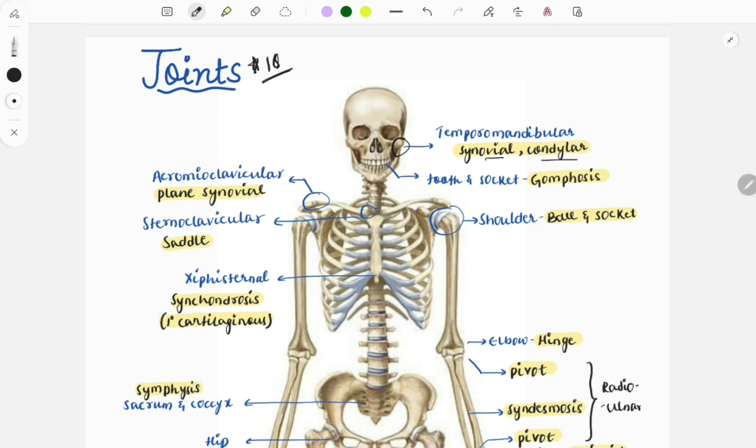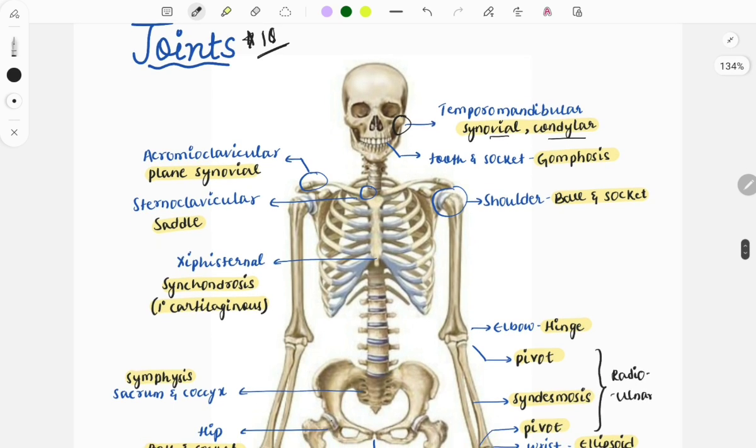It is the synovial type of joint and a condylar joint. Then moving on, the joint of the tooth and socket is given a special name called gomphosis.